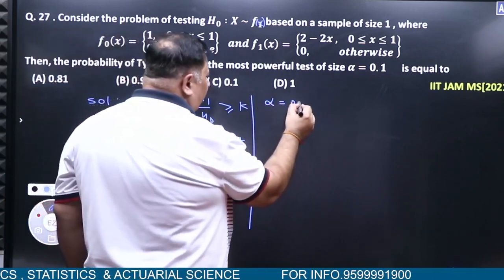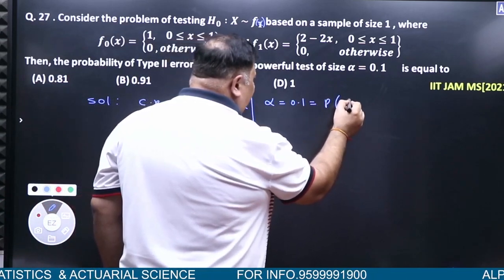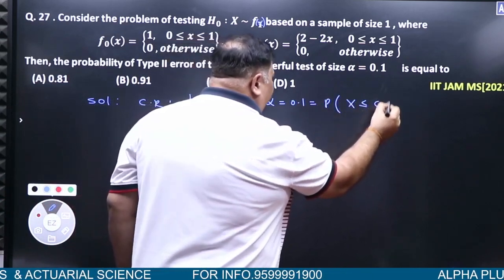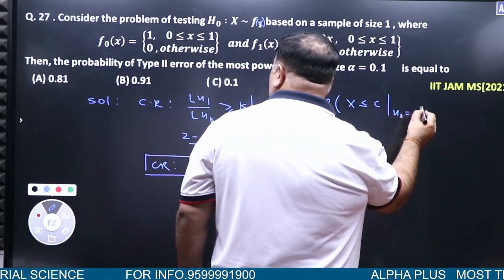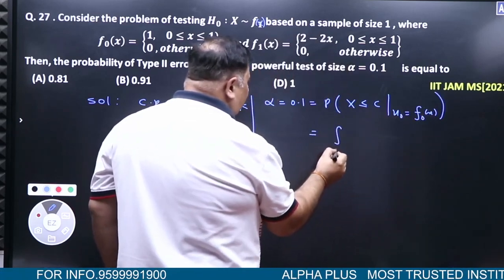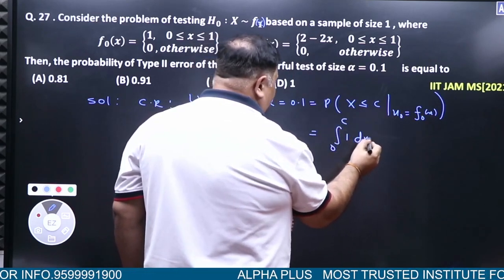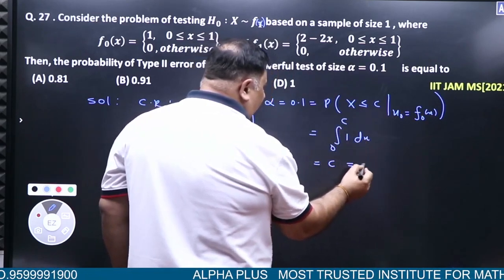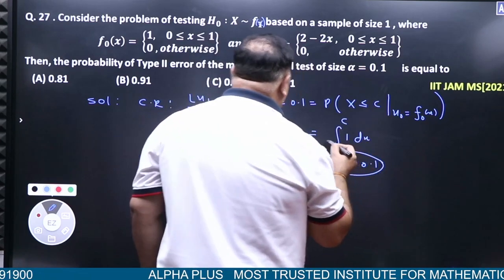Alpha is equal to 0.1, which is probability of rejecting H₀ when H₀ is true, meaning f₀(x). So integrate from 0 to c, 1 dx. So c equals 0.1. Now what do you need to find?